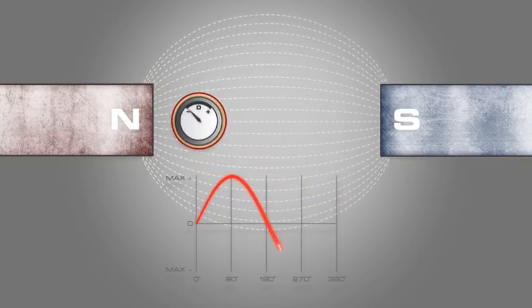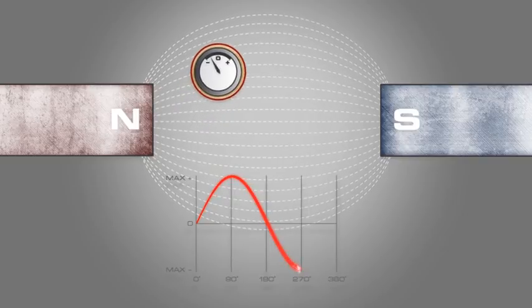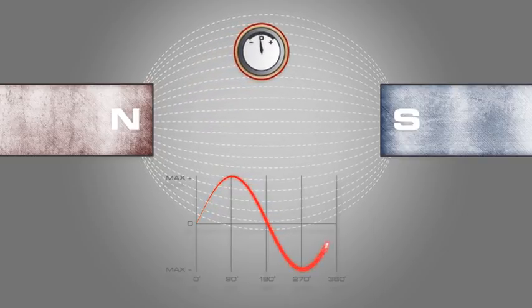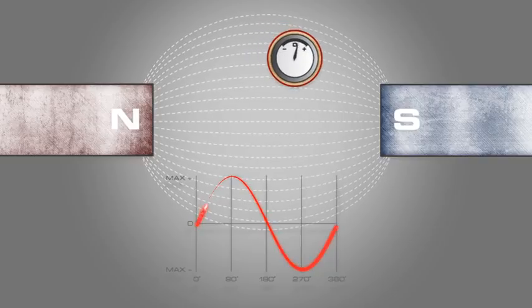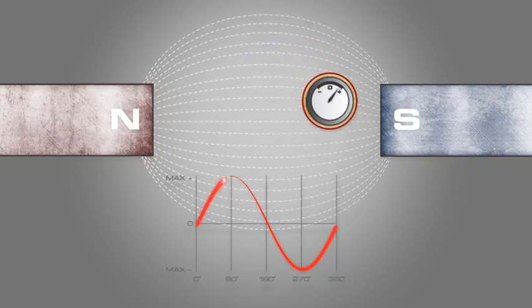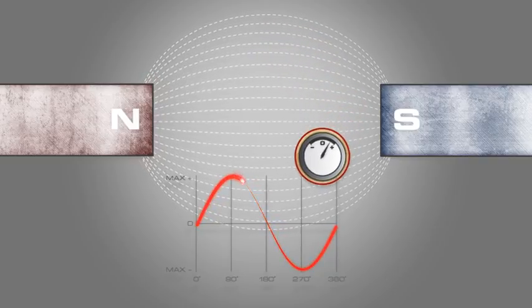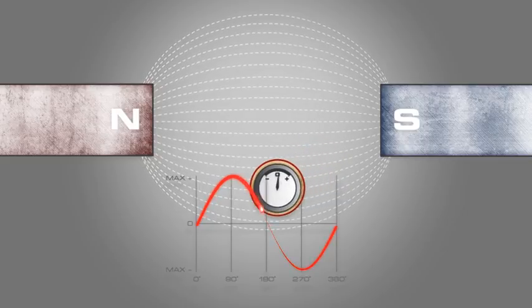Sinusoidal waveforms are often referred to as a sine wave. Looking at the waveform, we can see how the current changes as we pass through the magnetic lines of flux. Take note that one revolution, or complete circle, creates one complete cycle for the sinusoidal waveform.